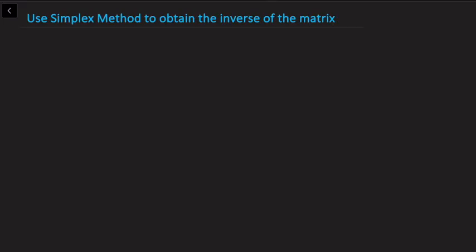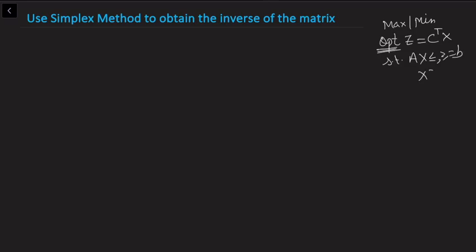In this video, I'll be using the simplex method to obtain the inverse of a matrix. That's another application of the simplex method, which is usually used to solve a linear programming problem with an objective function — either maximization or minimization — subject to certain constraints Ax ≤, ≥, or = b, and with non-negative restrictions on decision variables. Now let's see how we can find the inverse of a matrix using the simplex method.